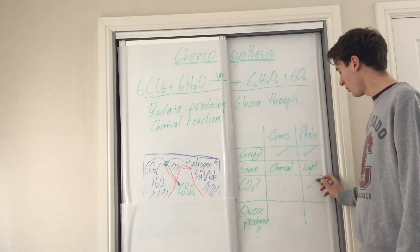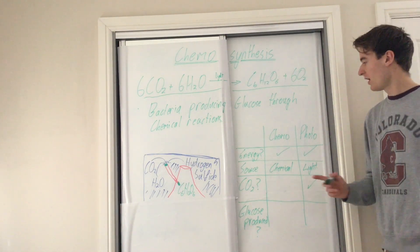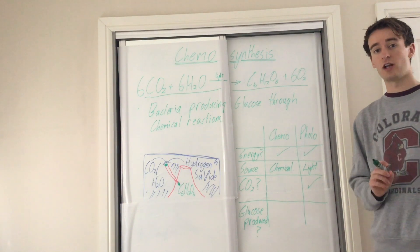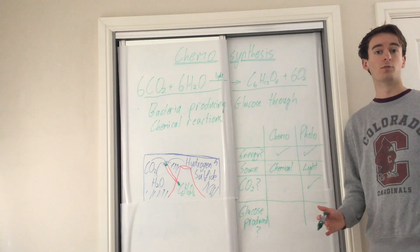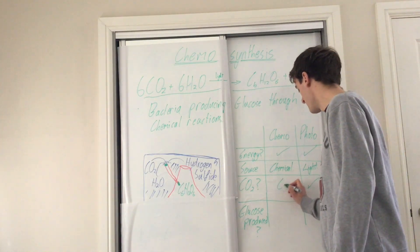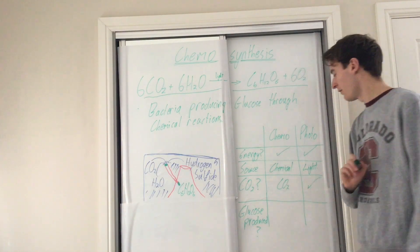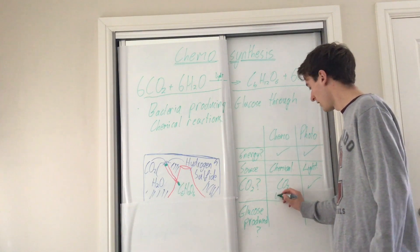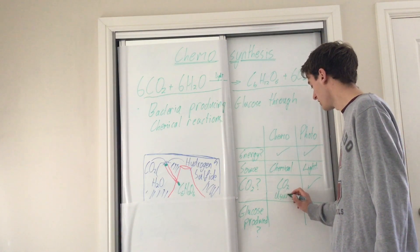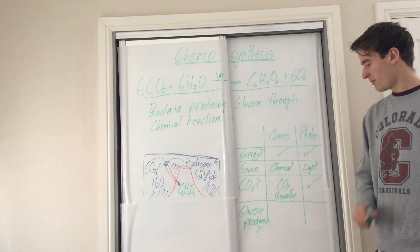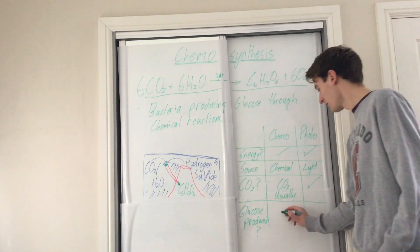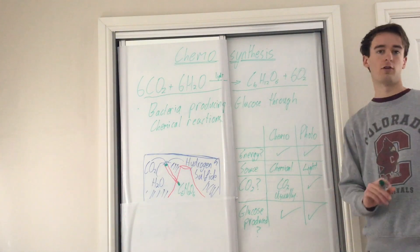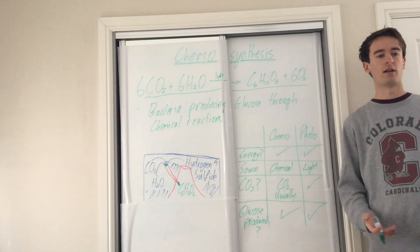Photosynthesis actually requires CO2. Chemosynthesis usually requires CO2. This is the important bit. There are other options to make energy. However, we're going to put CO2 usually. And the key point is in both cases, glucose is most definitely produced.